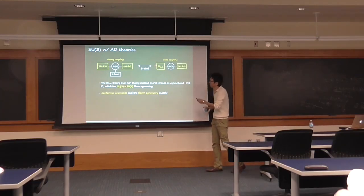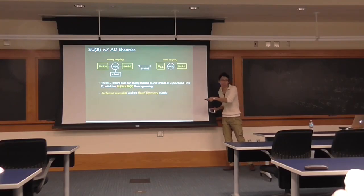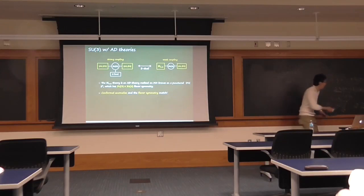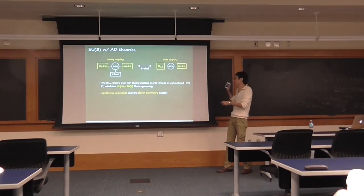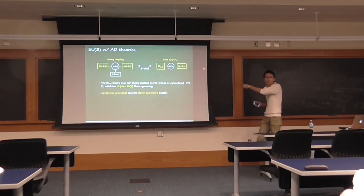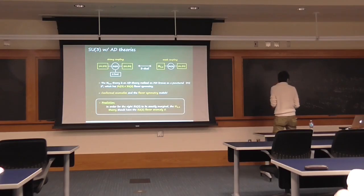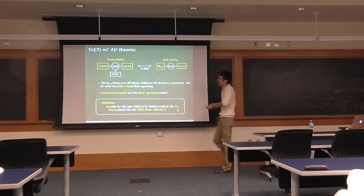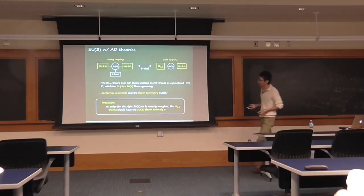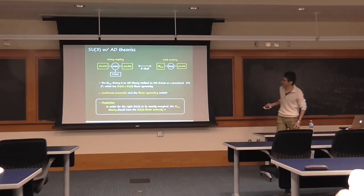In the strong coupling limit of this SU(3) theory, the curve factorizes in a very mysterious way: one piece is an A1D4 sector, but the other piece is something very different — another type of Argyres-Douglas theory discussed by Gaiotto. This new Argyres-Douglas theory has SU(3) times SU(2) flavor symmetry. There was no prediction for its SU(2) flavor anomaly, but from our analysis we know it must be 5 so that the beta function for the SU(2) gauging vanishes. This is our prediction for this Argyres-Douglas theory.